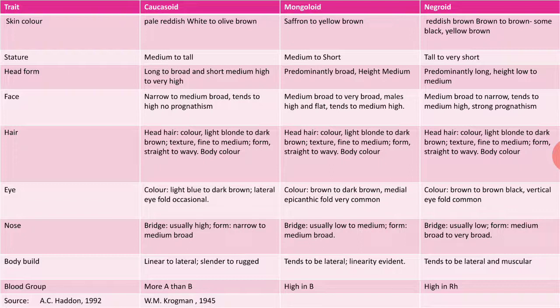For the nose: Caucasoid have a usually high nose bridge with narrow to medium broad form; Mongoloid have a low to medium nose bridge with medium broad form; Negroid have a usually low bridge with medium broad to very broad form. For body build: Caucasoid are linear to lateral, slender to rugged; Mongoloid tend to be lateral with linearity evident; Negroid tend to be lateral and muscular.